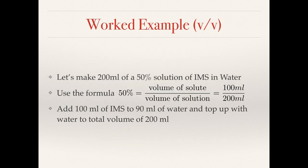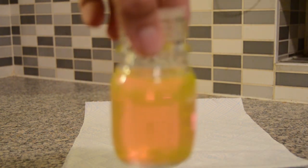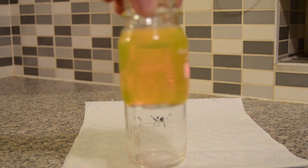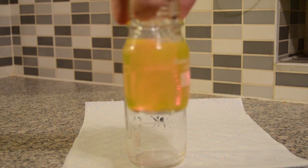We're going to go back to the kitchen to make up 200 millilitres of a 50% solution of IMS in water. We know the volume of solute over volume of solution — we're expecting 100 to 200. So we're going to start with 100 millilitres of IMS, which I've already measured out, not particularly accurately as I don't have a measuring cylinder here, so I'm just using these shot glass bottles to get a fairly accurate measurement.